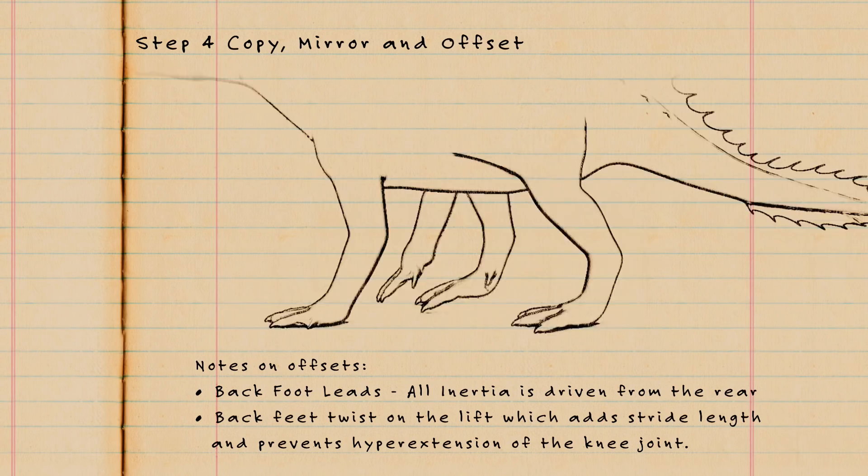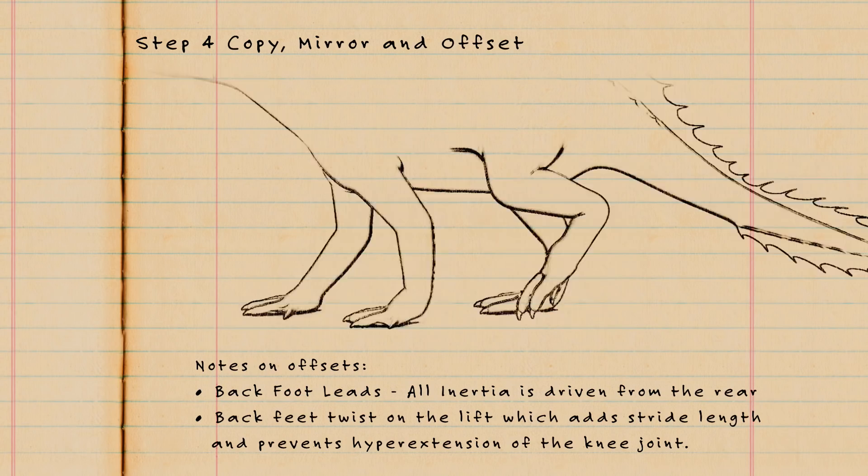So as you can see, by applying the temporal aspects of the golden ratio with the inertia method, we're able to create far more natural animation using fewer keyframes in a fraction of the time of traditional pose-to-pose methods.